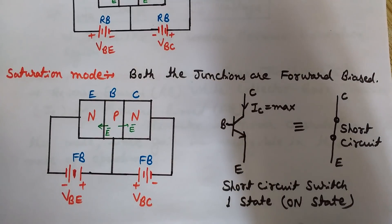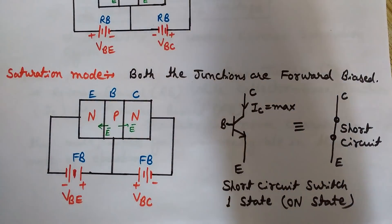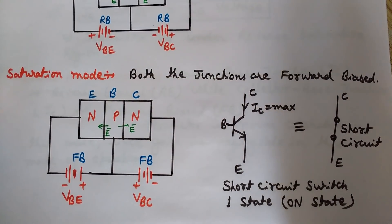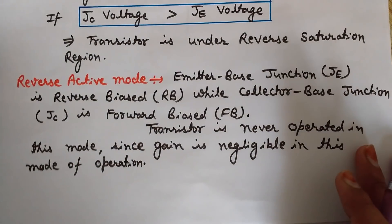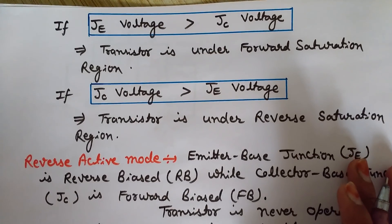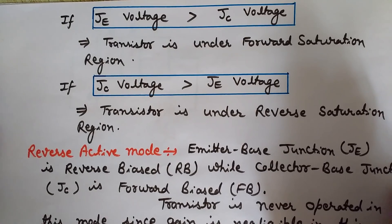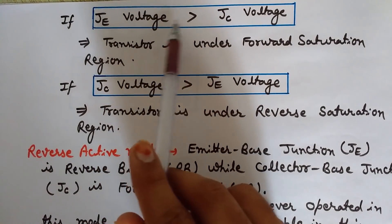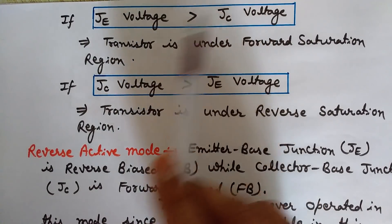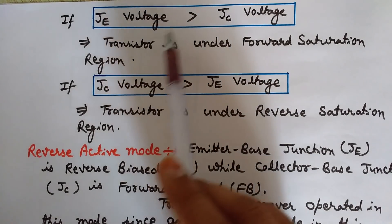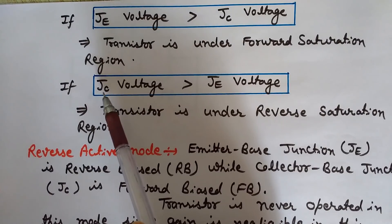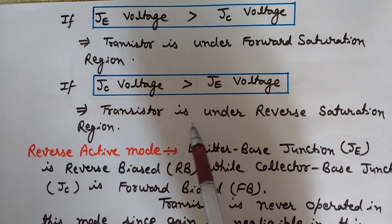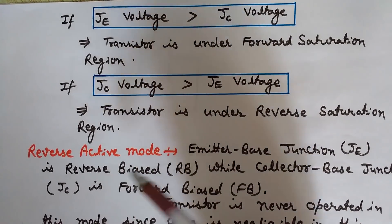This is known as the one state or on state of the transistor — the saturation mode. In both saturation and cutoff modes, the transistor acts as a switch: on switch in saturation and off switch in cutoff. One more thing: if the emitter junction voltage is higher in comparison to the collector junction voltage, the transistor is under forward saturation. If the collector junction voltage is higher in comparison to the emitter junction voltage, the transistor is under reverse saturation.